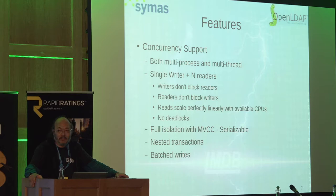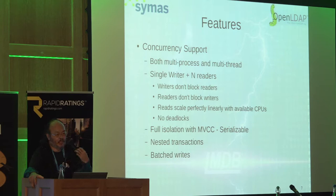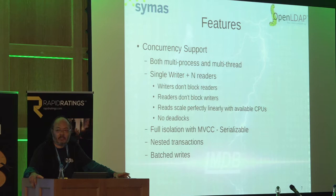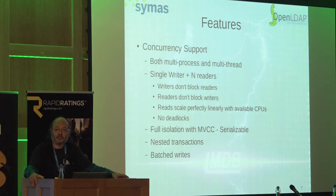It supports both multiprocess and multithread concurrency. The concurrency model is a single writer plus an arbitrary number of readers. In most concurrency systems, writers and readers are exclusive — one writer blocks all readers. But in LMDB, writers don't block readers and readers don't block writers. Reads take no locks and there are no blocking calls in the read path, so nothing slows them down. Reads scale perfectly linearly across as many CPUs as you have.